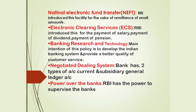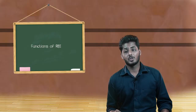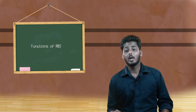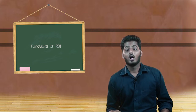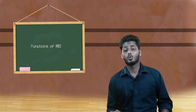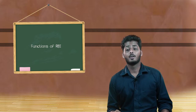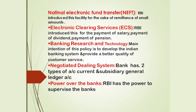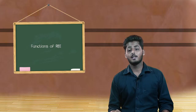The next point is Electronic Clearing Services (ECS) — RBI introduced this for the payment of salary, payment of dividend, and payment of pension. Next point: banking research and technology — the main intention of this policy is to develop the Indian banking system and provide better quality customer service. The next point is Negotiated Dealing System — banks have two types of accounts: current and Subsidiary General Ledger (SGL) account. The next point is power over banks — RBI has the power to supervise banks.